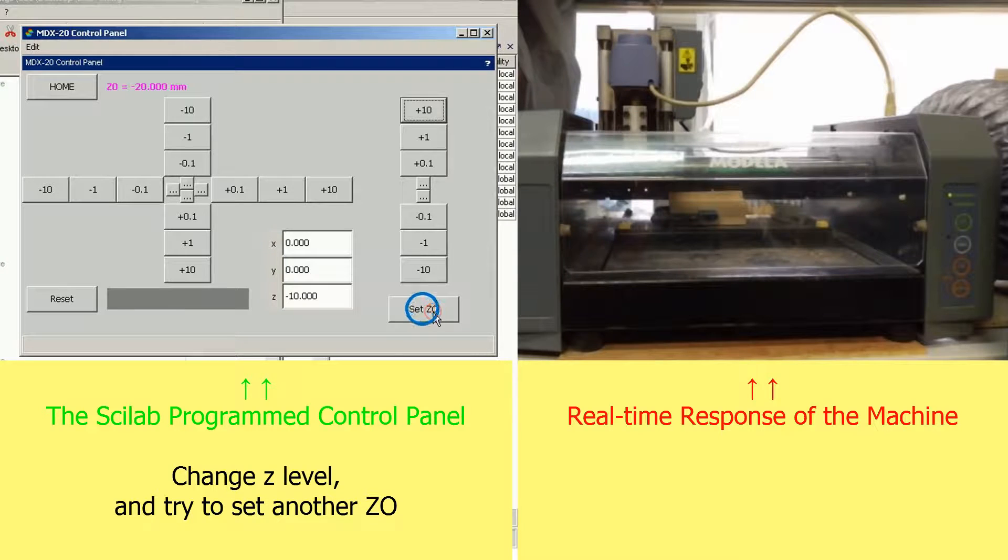You can change the set zero level anytime by pressing the button again. Now you can see the set zero position is changed to negative 10mm.